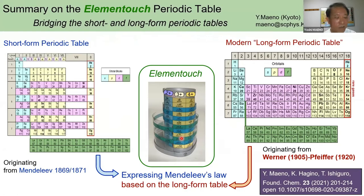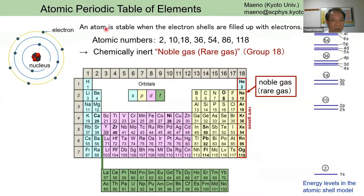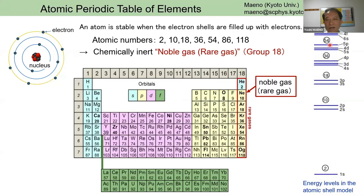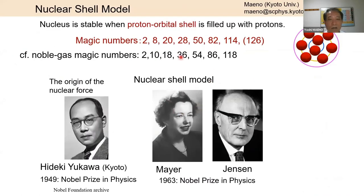Now let me move to the second part — the nuclear periodic table. As you know, noble gas elements — helium, neon, argon — are stable because electron shells are completely filled. You have 2, 10, 18 electrons, and these are stable configurations with an energy gap.